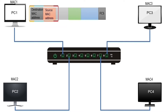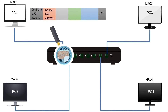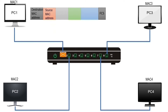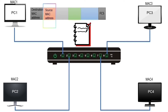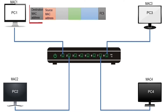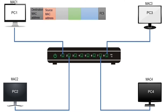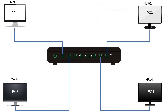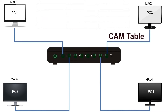A switch understands and uses only hardware addresses to process frames. When it receives a frame, it reads the source MAC address and destination MAC address. It uses the source address to learn about the connected device and the destination address to make a forwarding decision. It saves source addresses in a table known as the CAM table, which has three fields: MAC address, port, and aging.